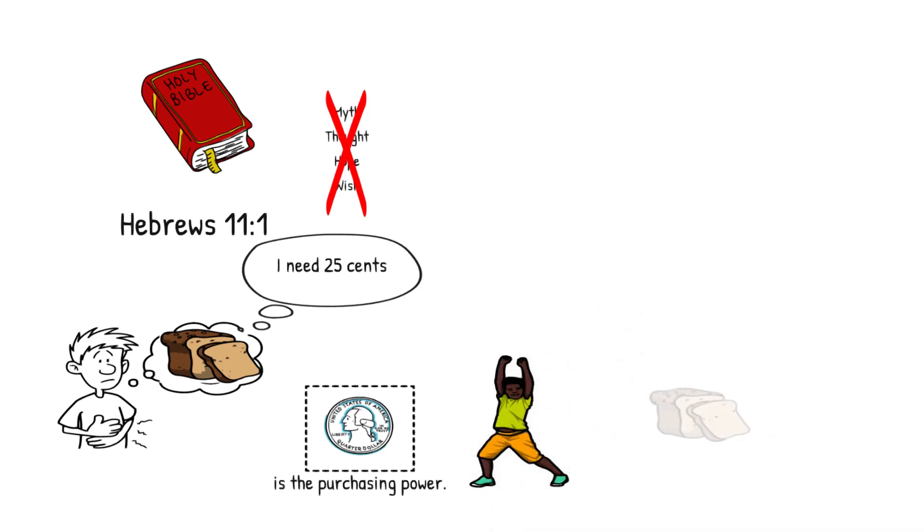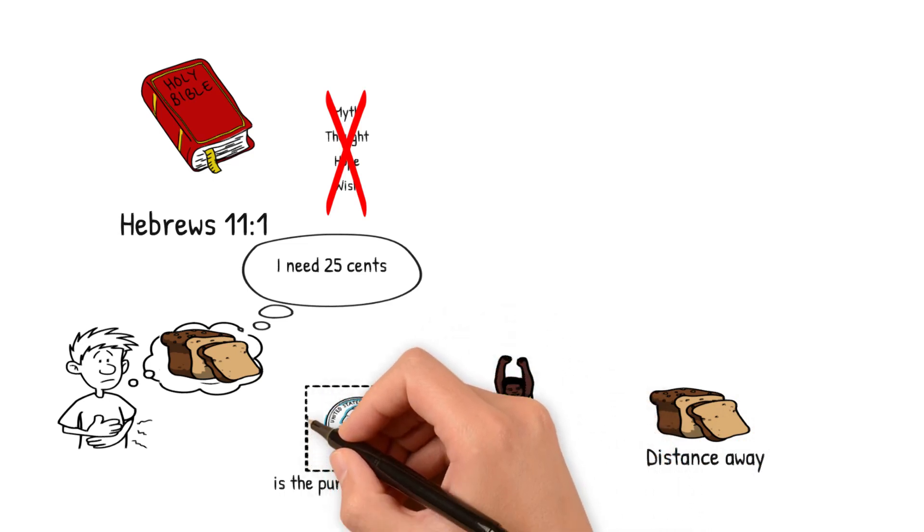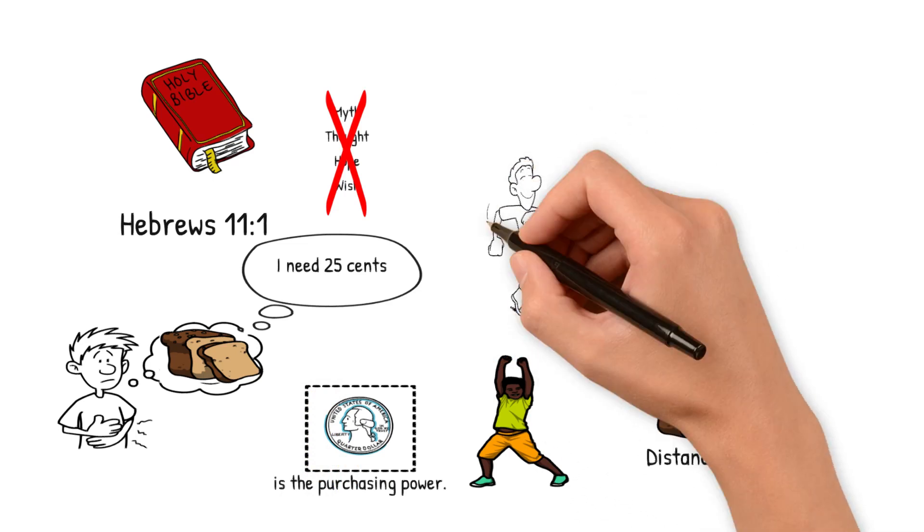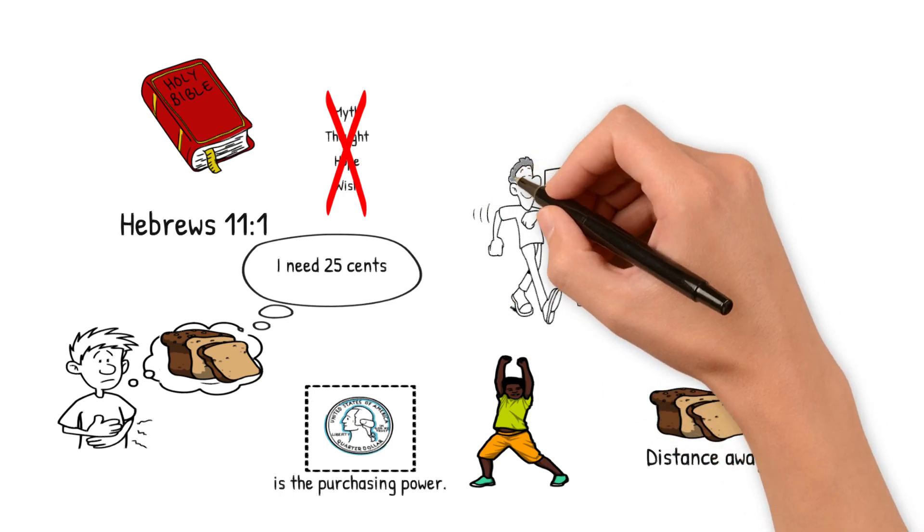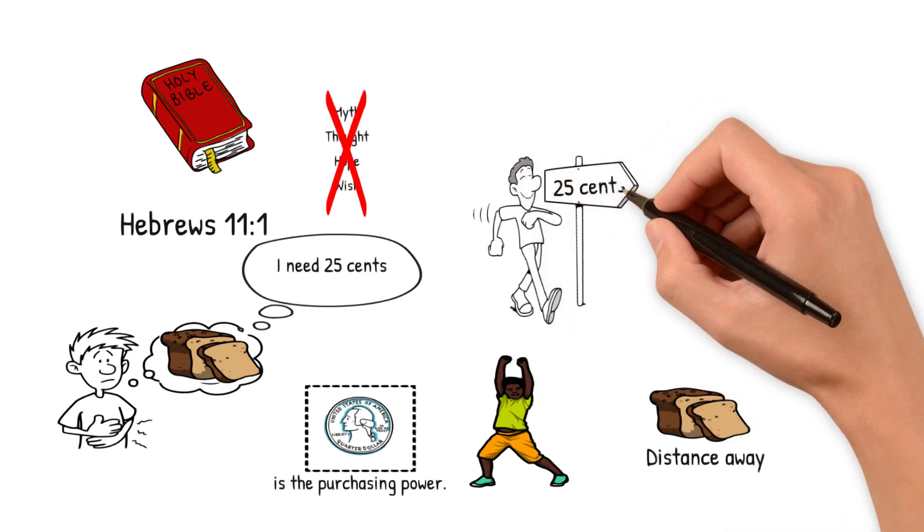I can be just as happy standing here with the 25 cents and the loaf of bread on Spring Street. Now, I've got the 25 cents. It's not just something I imagine. I'm possessing the 25 cents. I walk out the door. Well, I'm just as happy as if I had the bread, for I've got the purchase power.